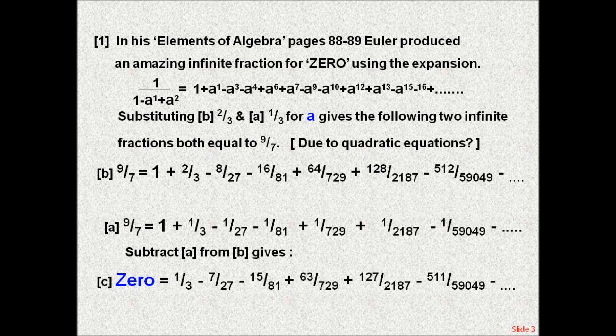In his Elements of Algebra, pages 88-89, Euler produced an amazing infinite fraction for zero using the algebraic expansion shown. Substituting for two-thirds and one-third for A in the expansion results in two numerically different infinite fractions, both equal to nine-sevenths, which on subtraction results in the infinite fraction for zero, as shown.